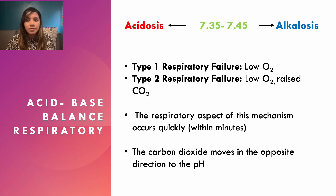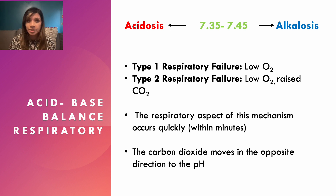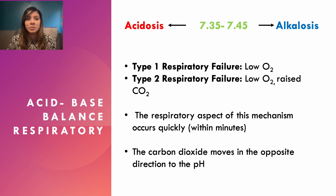The respiratory component adjusts within minutes — the body's chemoreceptors detect acidosis or alkalosis very quickly and breathing rate begins to adjust. If you're acidotic, the body speeds up breathing to blow off CO2 and carbonic acid. If you're alkalotic, the body slows breathing to retain CO2, which dissociates into carbonic acid and brings the pH back into the normal range.